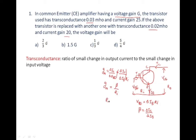Here ri is the input resistance, gm is the transconductance, and beta is the current gain of the common emitter amplifier. The voltage gain av equals current gain times resistance gain, where resistance gain is the output resistance ro divided by the input resistance ri. So av equals beta times ro divided by ri.